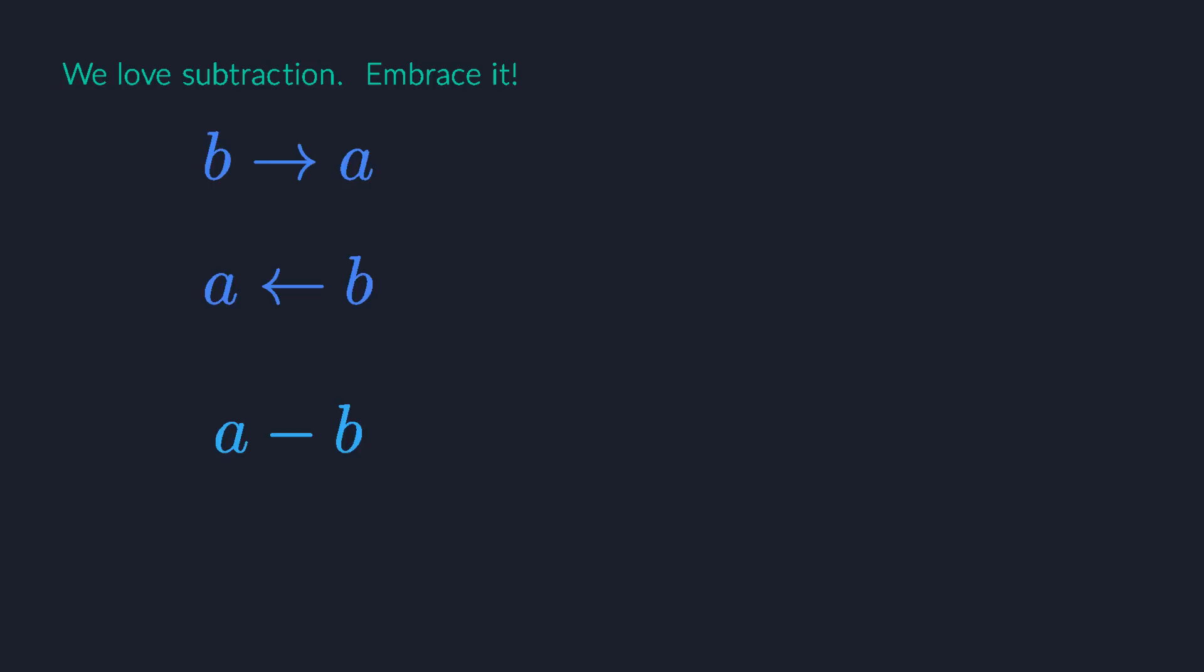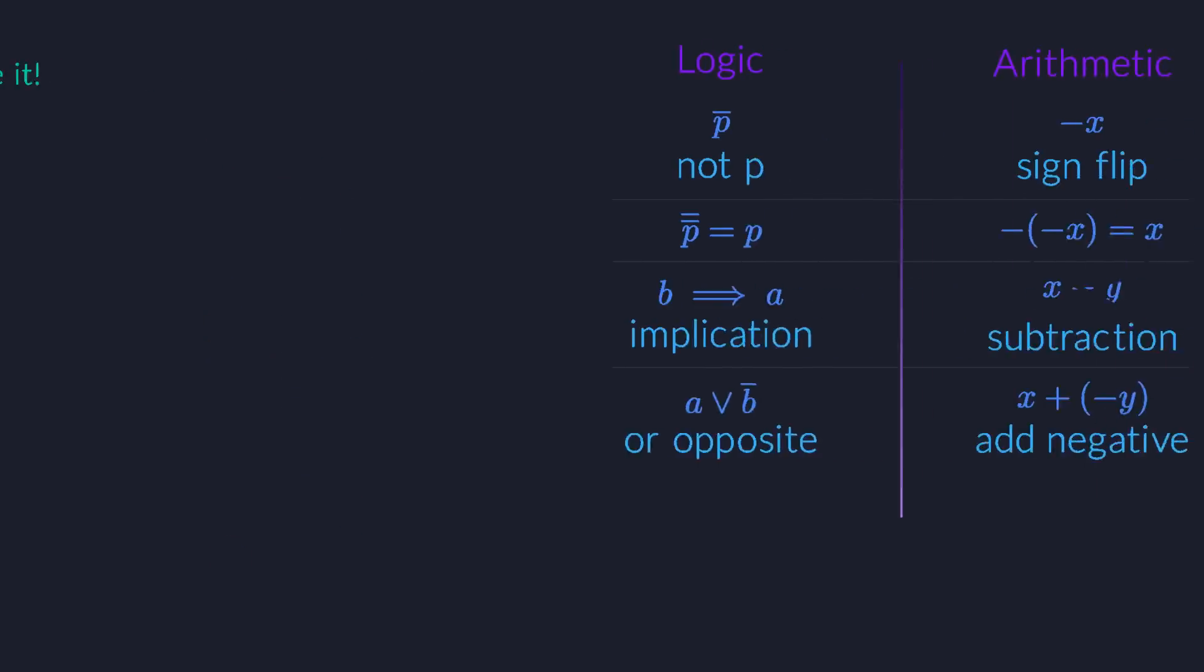So instead of getting rid of subtraction, we just acknowledge that it behaves differently, and we make that fact more explicit and visible in the notation. Sure, this doesn't seem like a big deal, but it has many advantages.